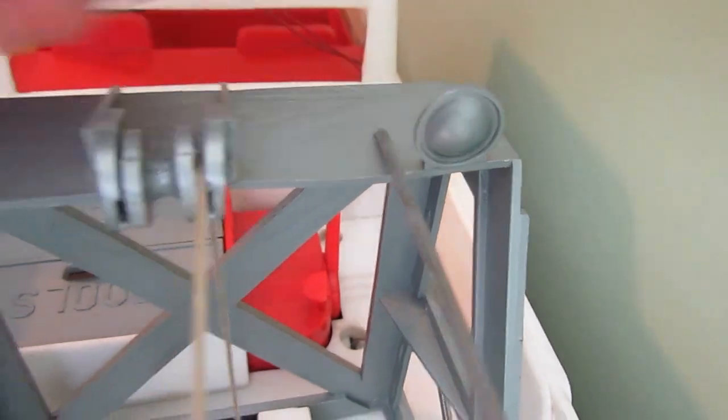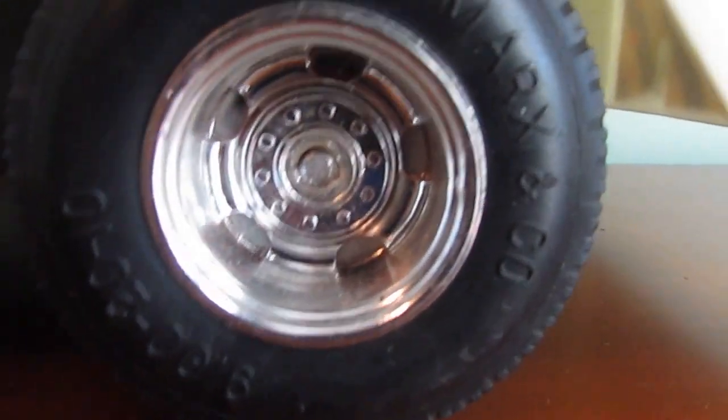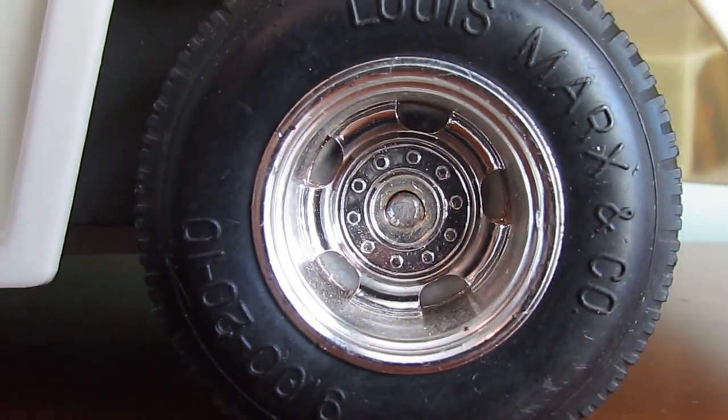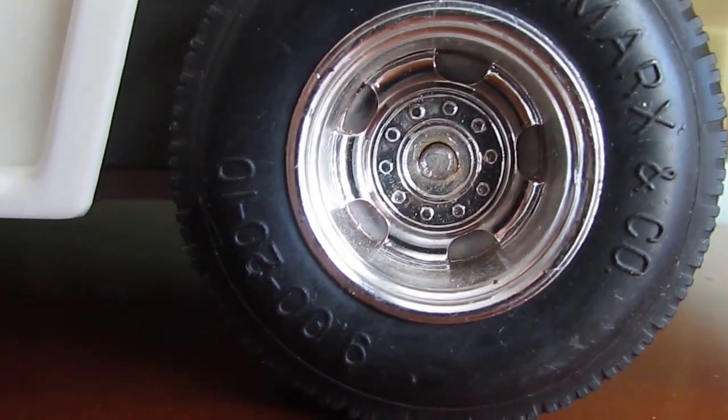We got these pieces supposed to be like lights. These are normally broken off, in this case they're not. Got the wheel, still has a lot of chrome on it. Super nice and it says Lewis Marx and Co, and I'm assuming that's a patent number on there.